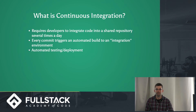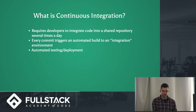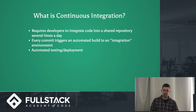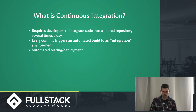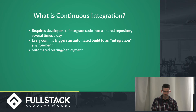So what is continuous integration? Continuous integration is the practice of frequently integrating new code with the existing code repository. It requires developers to integrate into a shared repository several times a day. When they commit changes, an automated build is kicked off by a CI server. That build also runs a suite of automated tests to check for regressions and make sure the rest of the application is still running smoothly.